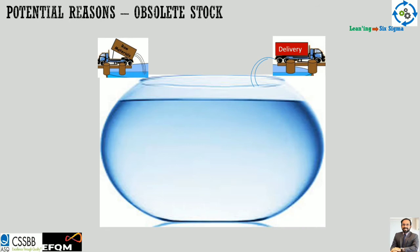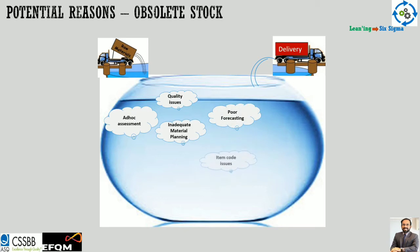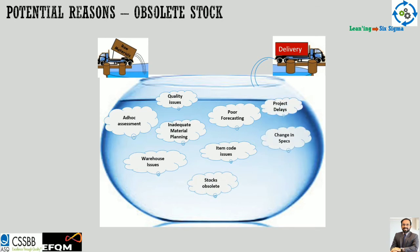There are many areas of profit leakage. One example is obsolete stock and stock-related issues — caused by ad hoc assessment, quality issues, inadequate material planning, poor forecasting, and item code issues. In many organizations, the same type of item is stored under two different item codes due to lack of standardization. When you search, it doesn't appear, so you order again even though stock exists. This leads to warehouse issues, obsolete stock, project delays, and changes in specifications — hidden areas where profit is eaten away, reducing your expected 20 percent return down to eight or nine percent.